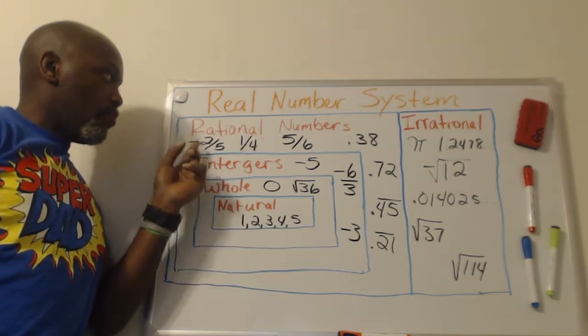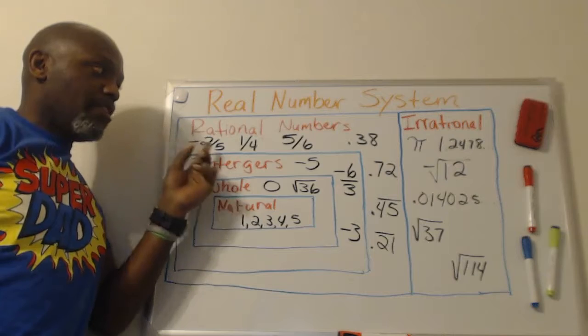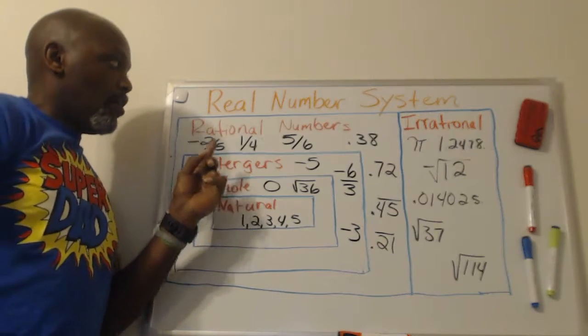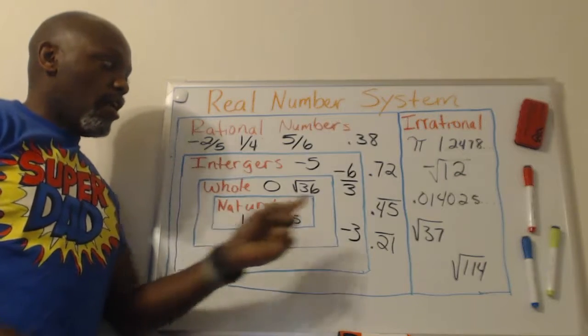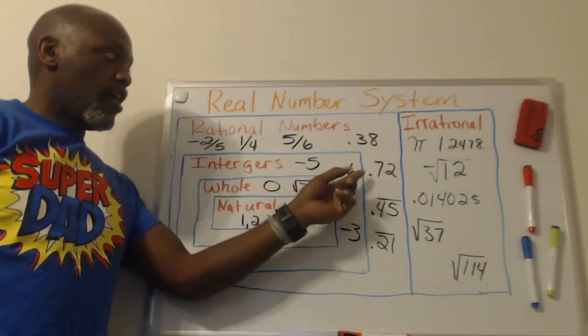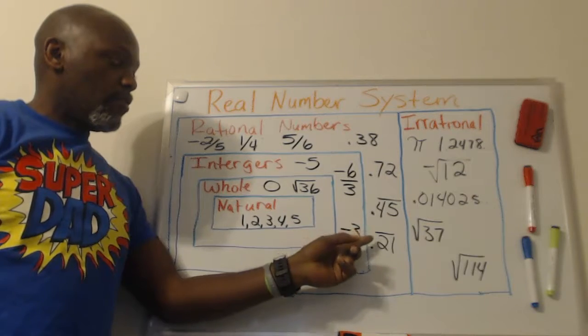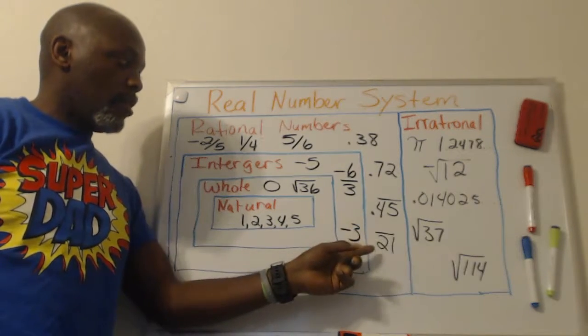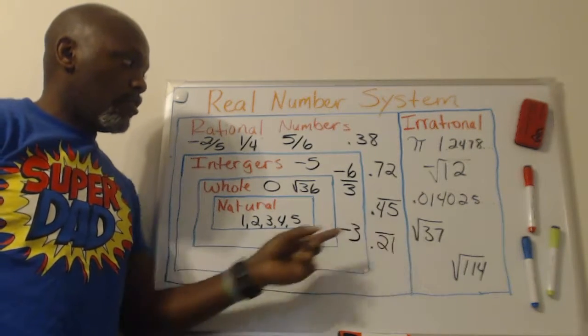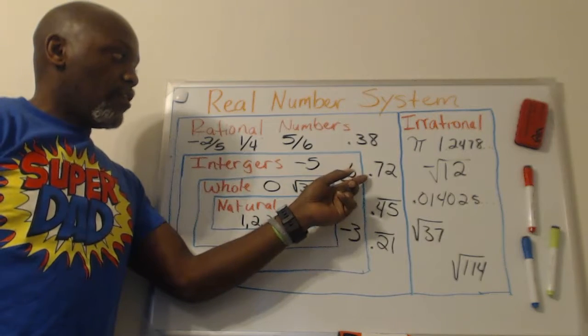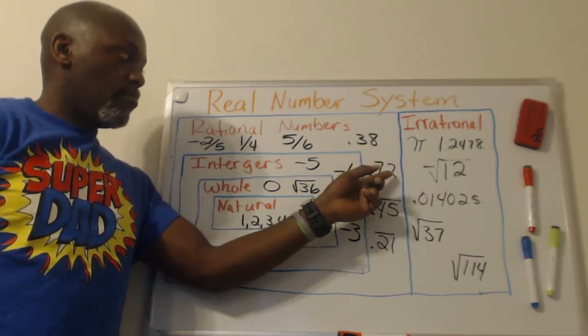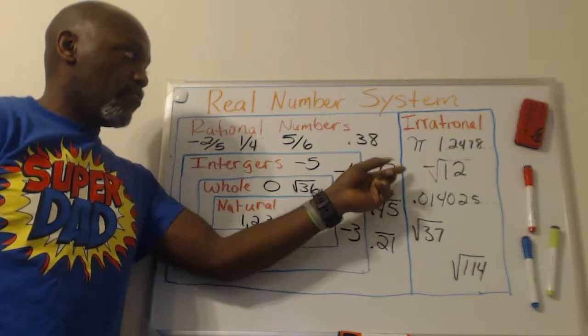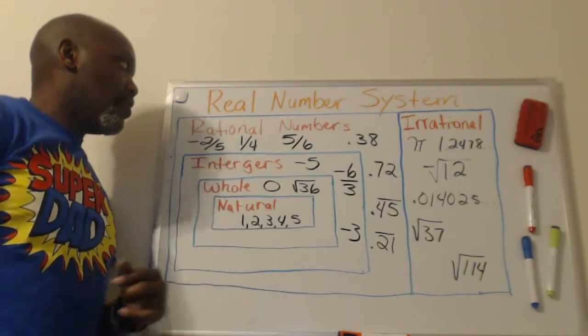Moving on to rational numbers. Rational numbers are numbers that can be written as a fraction, and that fraction can be converted into a decimal, either a repeating decimal or a terminating decimal. A repeating decimal means that you know the pattern. This would be 21, 21, 21. A terminating decimal means that it stops. There are no numbers after either the hundredths place or the thousandths place.